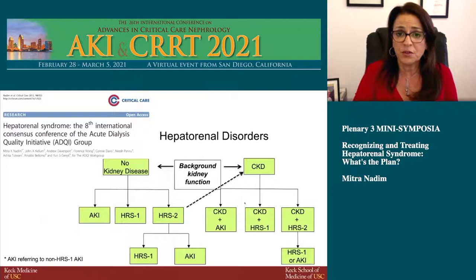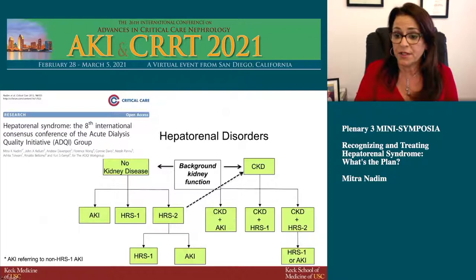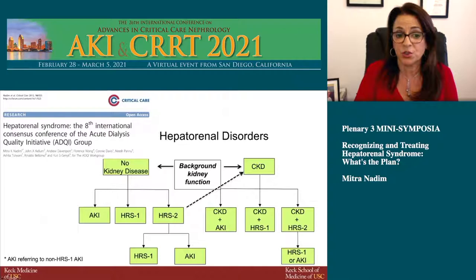We also put forth the notion of hepatorenal disorders: patients with liver disease can have underlying chronic kidney disease, and these patients can then develop either acute kidney injury, HRS type 1, or type 2. Patients with no kidney disease can develop HRS 1, 2, or AKI. Over time, HRS 2 could potentially lead to chronic kidney disease.